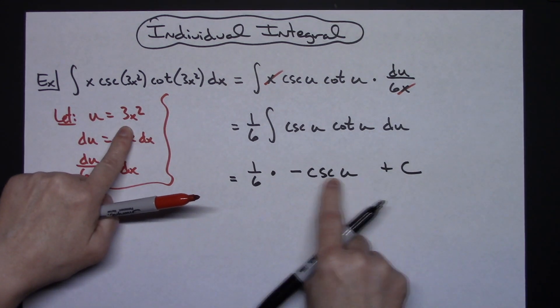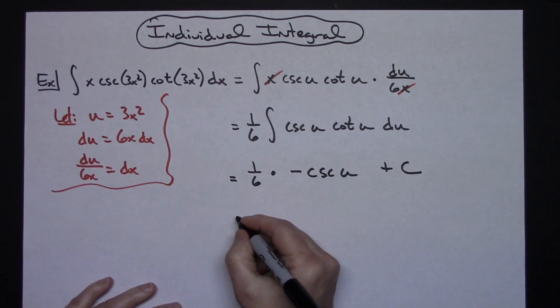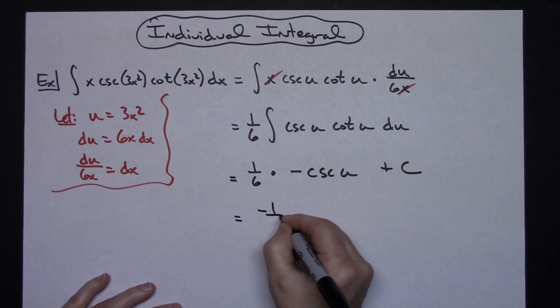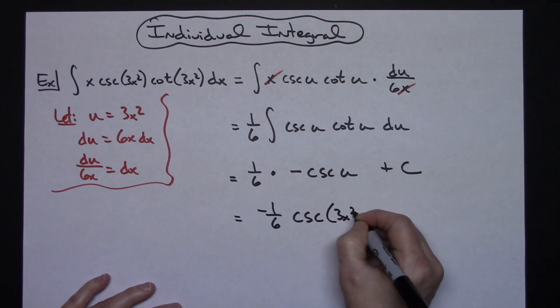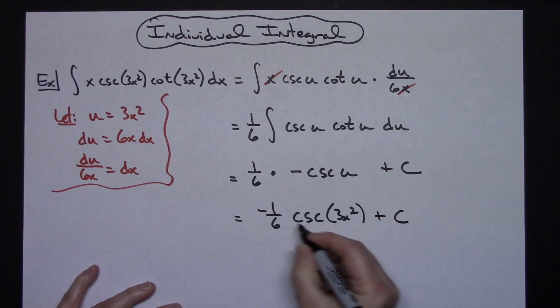I'm going to replace my u, pull the negative out in front there, cleaned up a little bit. So negative 1/6 and then cosecant of the 3x squared, and then plus C.